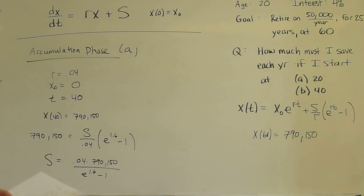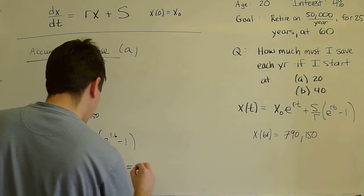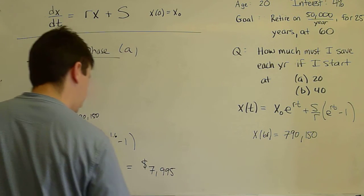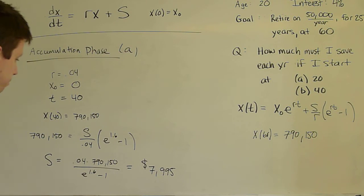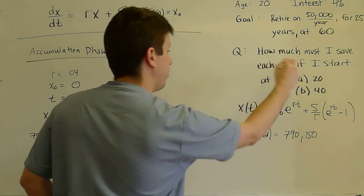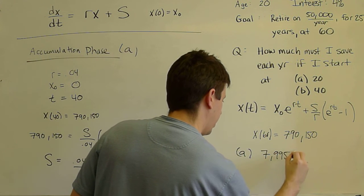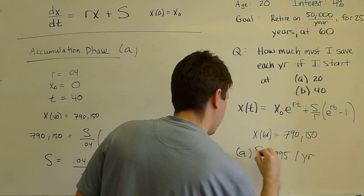And when we plug that into our calculator, it is the very reasonable number of $7,995 a year, if you start now. So that's good. We answered part A. $7,995 per year.